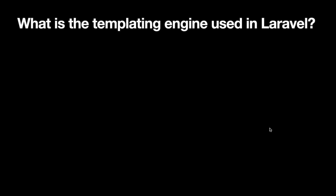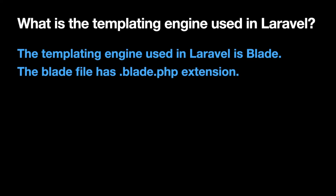The next question is: What is the templating engine used in Laravel? The templating engine used in Laravel is Blade. Blade files have the .blade.php extension. These blade files are located in the resources/views folder. Designers work on these blade files for the view part. If asked, simply say the templating engine in Laravel is Blade, with the extension .blade.php.